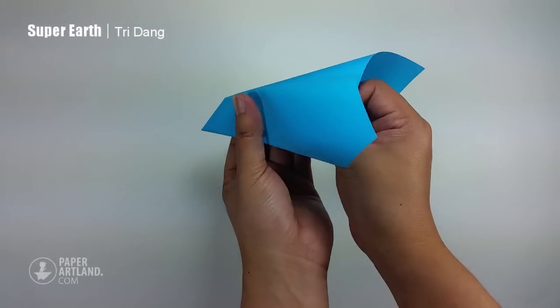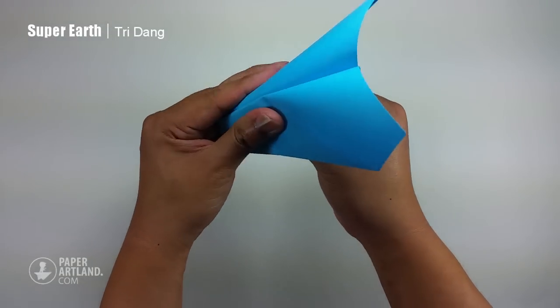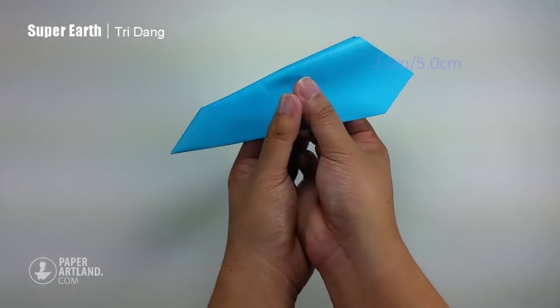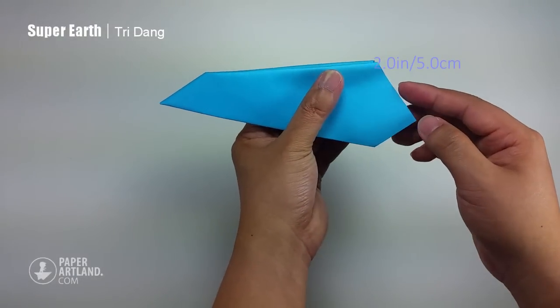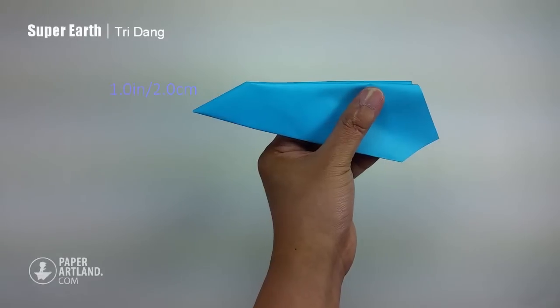And when I fold the other side, I need to use both hands to fix it. I will fold slowly. And you can see the distance here is about 2 inches. And the distance from the top here to this corner is about 1 inch.